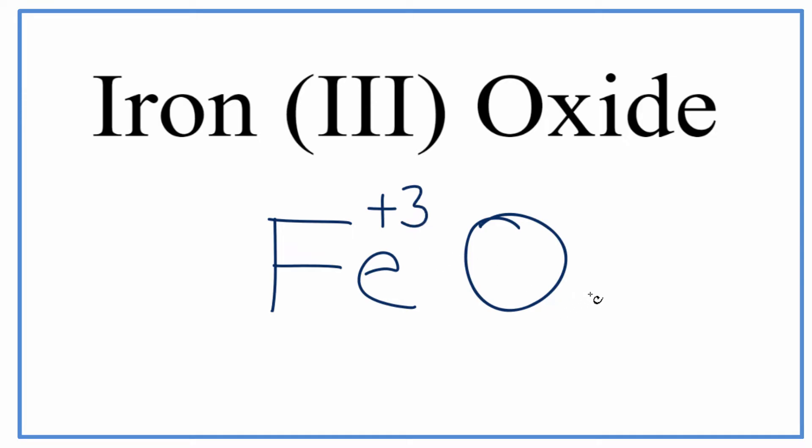When we look at the oxygen, we don't have that information. We need to go to the periodic table. Oxygen is in group 16, sometimes called 6A, and it always has a charge of minus 2.